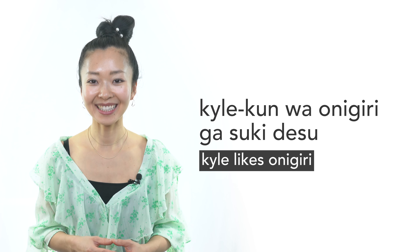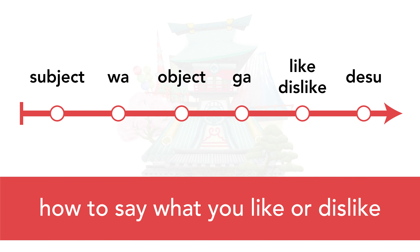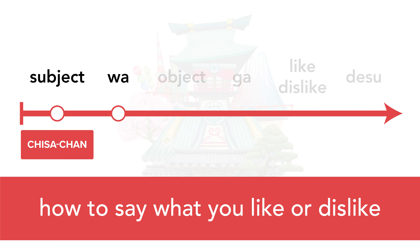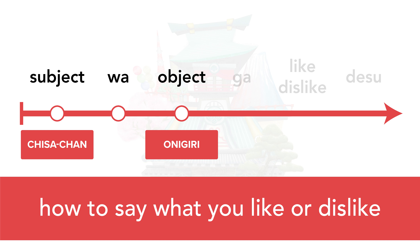As you can see, it all starts by first stating the subject, such as he, she, I, or even someone's name such as Chisa-chan. Next up comes the particle wa, as always, used to mark the main subject within a sentence. And now is the fun part — the object that you either like or dislike. Let's stick with Onigiri in this case. Next up comes the ga particle.